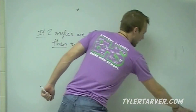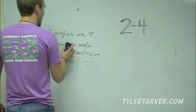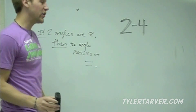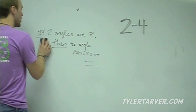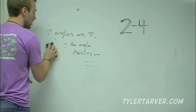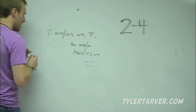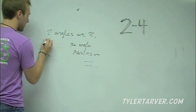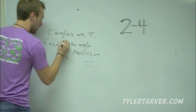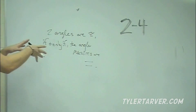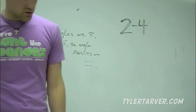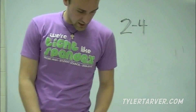So how do you write a biconditional statement? Easy — you drop the 'if' and wherever 'then' was, you put 'if and only if.' That means it's a biconditional statement, meaning it's correct both ways.